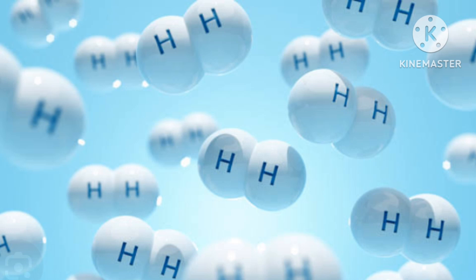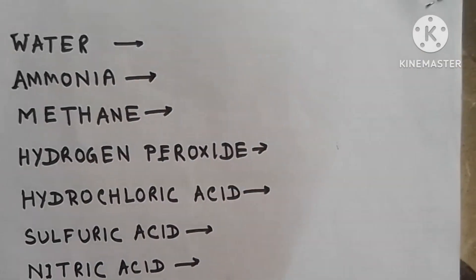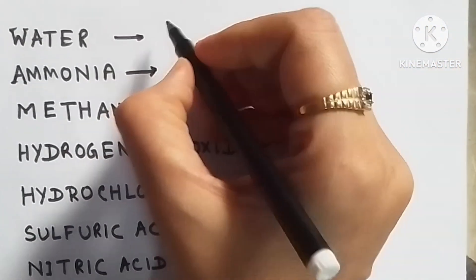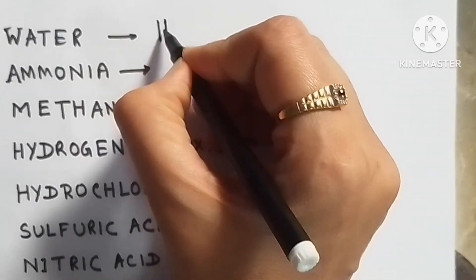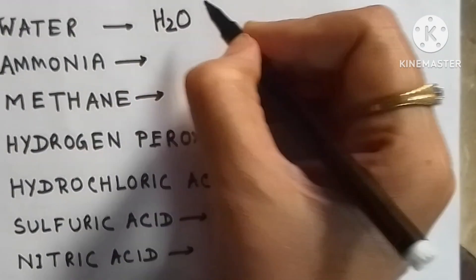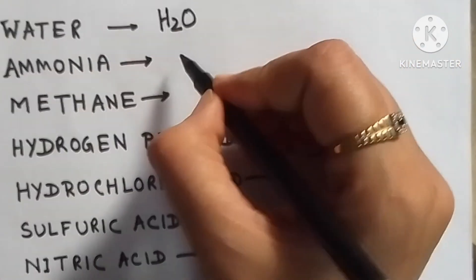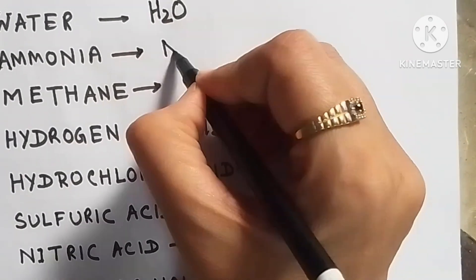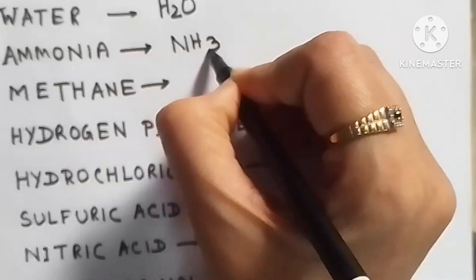Hydrogen combines with other elements to generate different types of compounds which we use in our daily life or see in our surroundings. Let's look at some examples: water (H2O), ammonia (NH3).